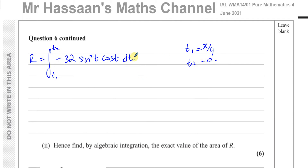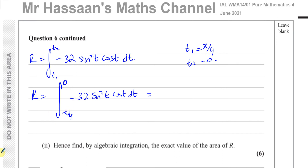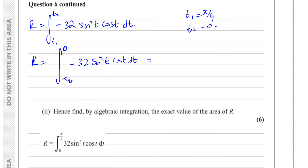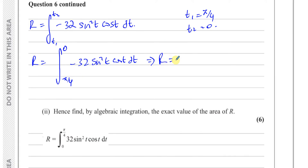Continuing from where we left off: t1 is pi over 4, t2 is 0. So R equals the integral from pi over 4 to 0 of minus 32 sine squared t cosine t dt. The required answer has positive 32 with limits 0 to pi over 4. Swapping the limits reverses the sign, so R equals the integral from 0 to pi over 4 of 32 sine squared t cosine t dt. We have shown what was required.